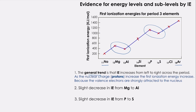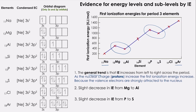What about the second point? First of all, we have to check the electronic configuration. As you can see here, we have the condensed electronic configuration and the orbital diagram for only 3S and 3P. We can see that when moving from Mg to Al, if we would like to remove an electron from the last shell of Al, you are removing an electron from 3P, which is further away from the nucleus than 3S.